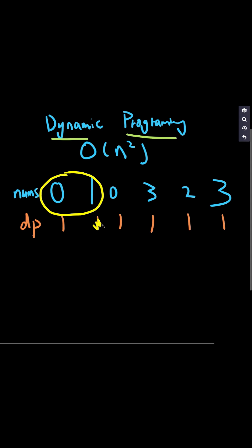So we can have this dp changed to 2. As we are moving to the number 3 here, we can see that if we are looking back, we have 0, 1, and 3.